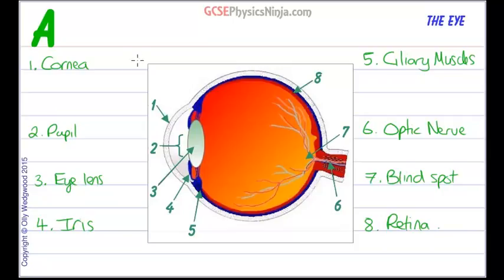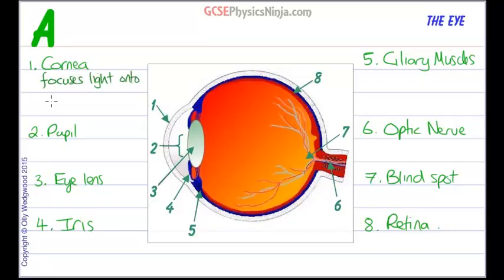The cornea is where light enters the eye, and the cornea focuses light onto the retina.